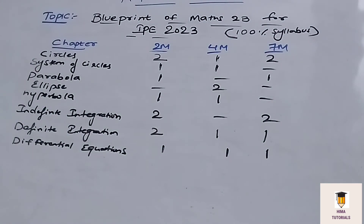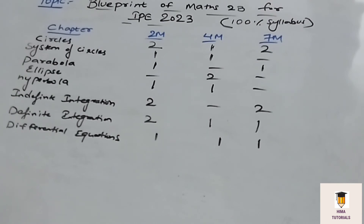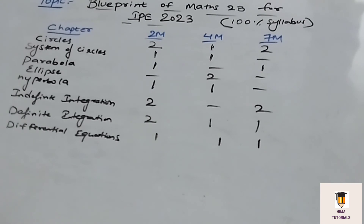I hope it is clear — please make a note of it. This is the blueprint for Maths 2A and 2B. Students, if you have any doubts in these chapters, please comment in the comment section. I will explain clearly in the next video. That's all for the session. If you like this video, please like, share, and subscribe to my channel, Hema Tutorials. Thank you.